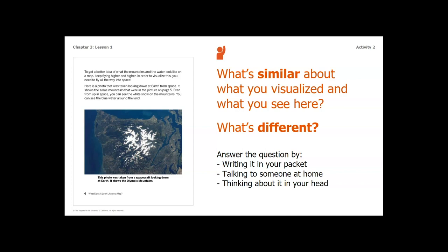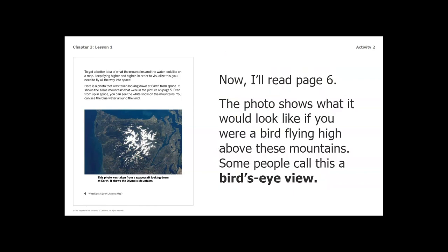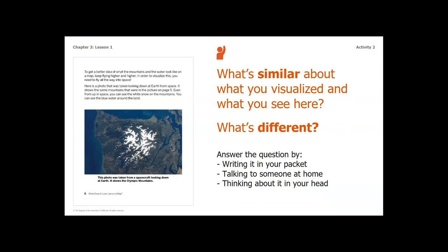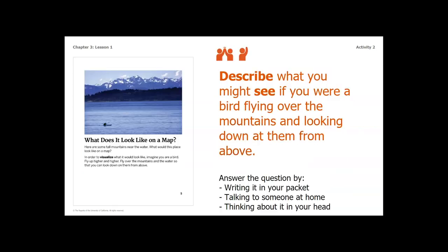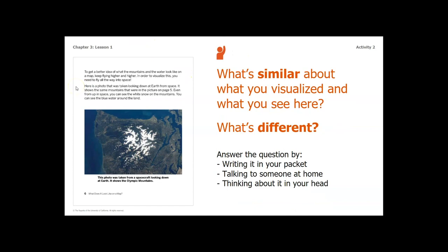When thinking about similarities and differences, I thought the water was still going to look blue because it was blue in the picture on page five. I also expected there to be some white because on page five we see snow on top of those mountains. Something that was different is that in this picture you can't really see the mountain peaks at all — the only way you know they're mountains is from the snow. I thought the mountains would look more jagged from the bird's eye view than they actually do.